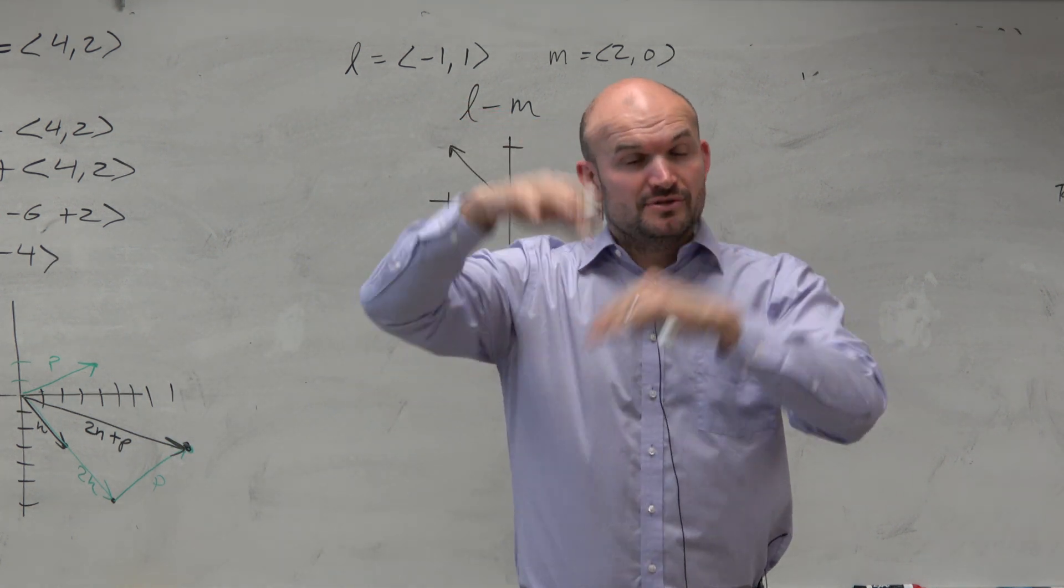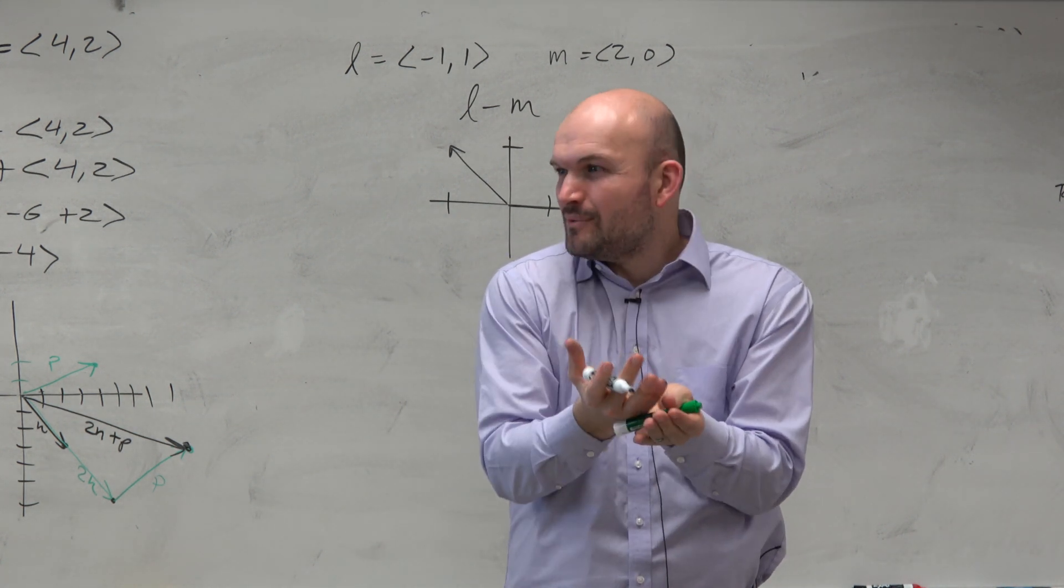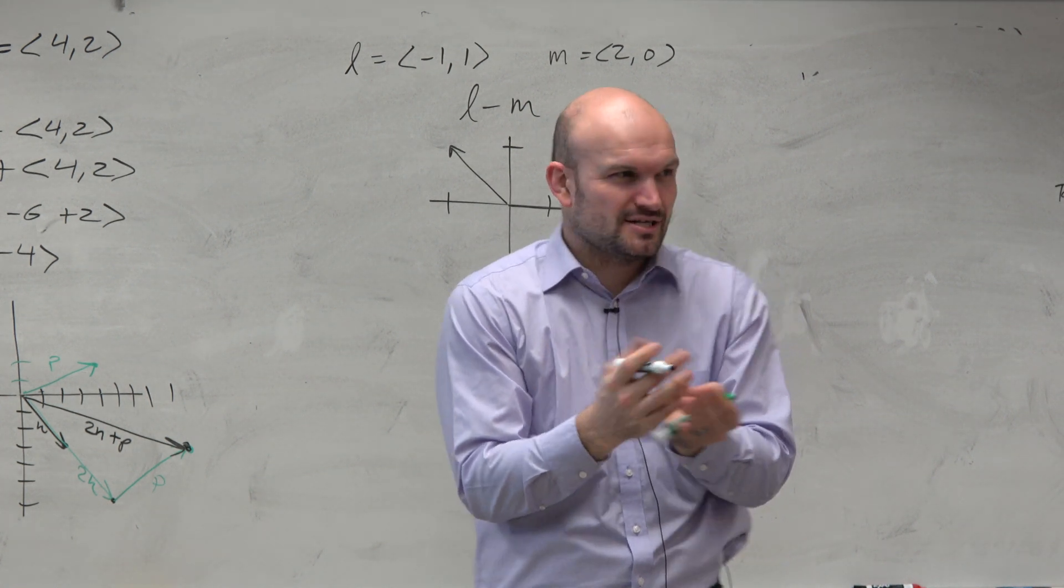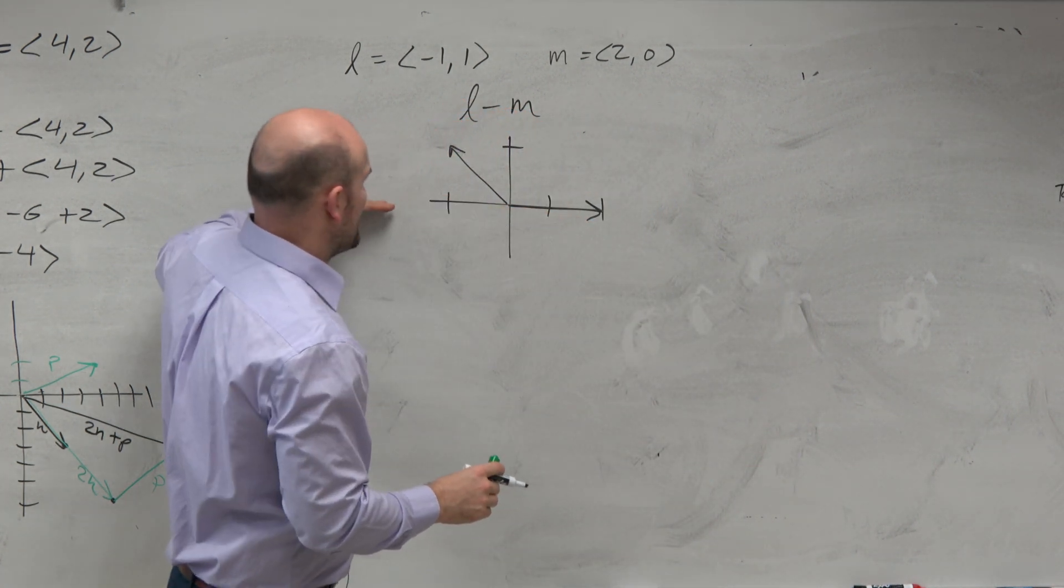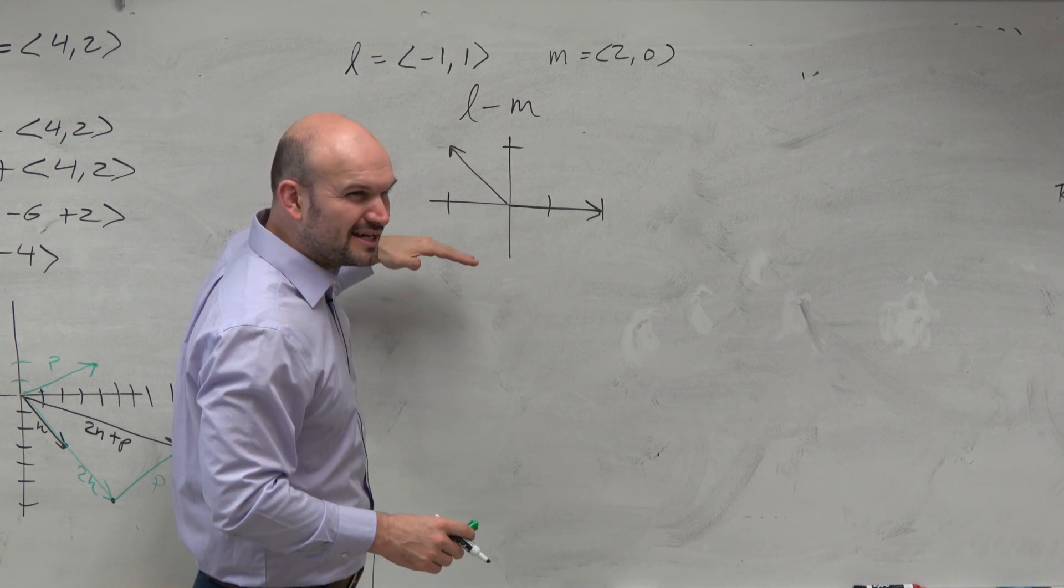So adding, I do the tail to head method. But what do we do for subtracting? How are we going to figure out this vector when we're actually subtracting these? Kind of looks a little weird, right? Should we bring it back that way instead of adding them? Should we slide it back? How is this going to work?